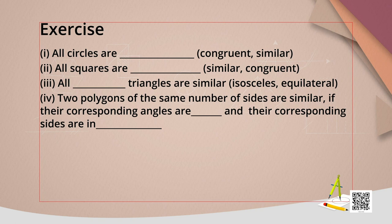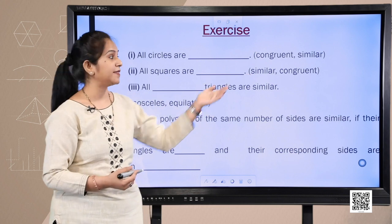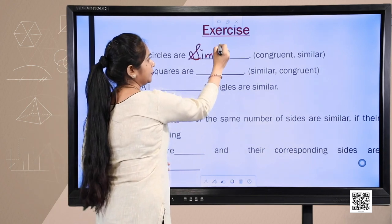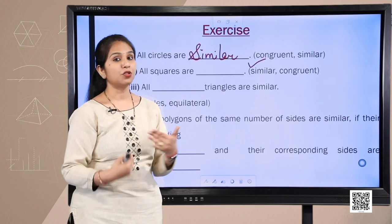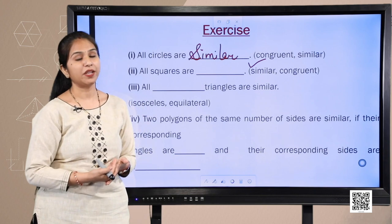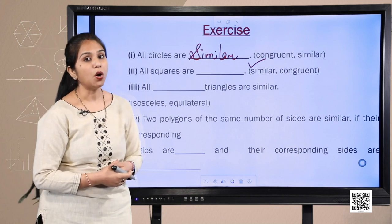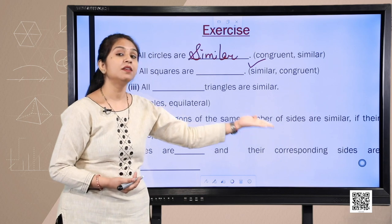Let's do a small exercise. Fill in the blanks with 'congruent' or 'similar': All circles are similar, because they have the same shape but different sizes. All squares are similar. All equilateral triangles are similar, because all their sides are equal. Two polygons with the same number of sides are similar if their corresponding angles are equal and their corresponding sides are in proportion.